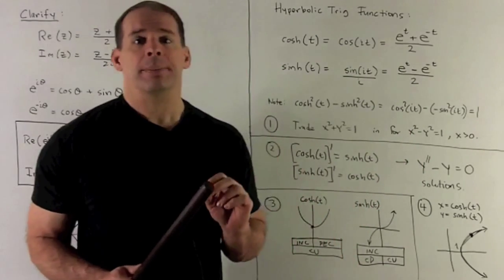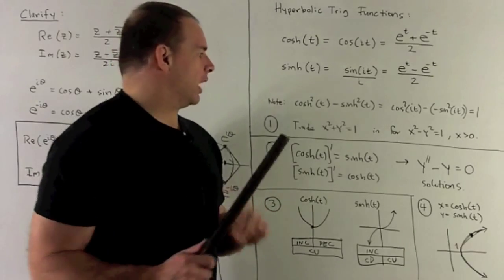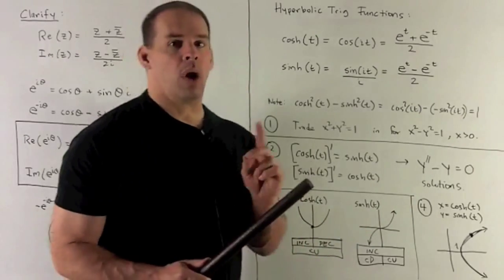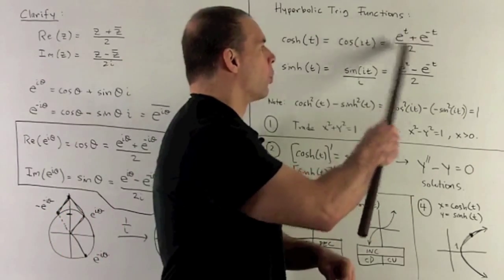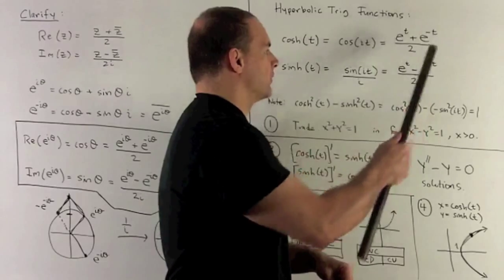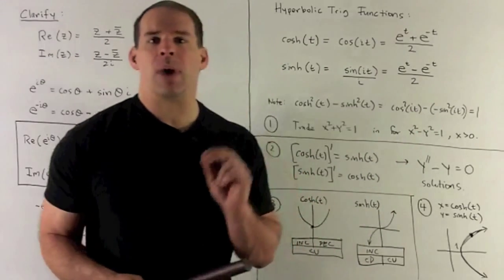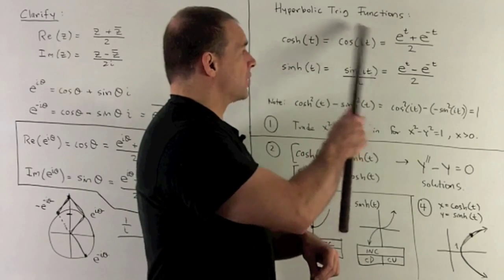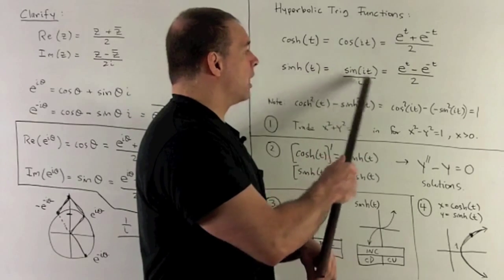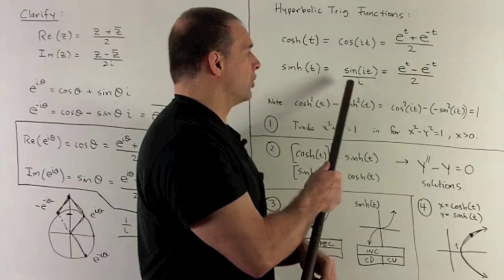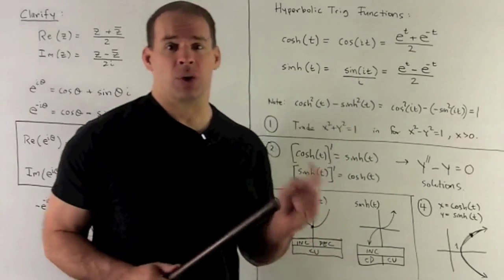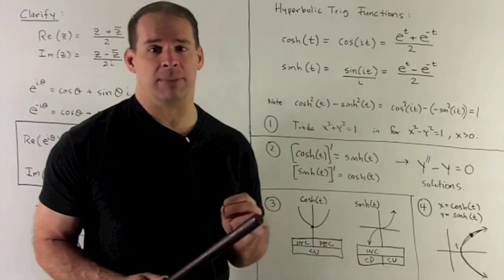From there, we have two ways to see the equation cosh squared minus sinh squared equals one. One way would be to work out the difference between the squares of these two. Another way is to use trig. If I have cosine and square it, we're going to square sine over i, which turns to minus sine squared, so the difference is cosine squared plus sine squared, and that gives me one.